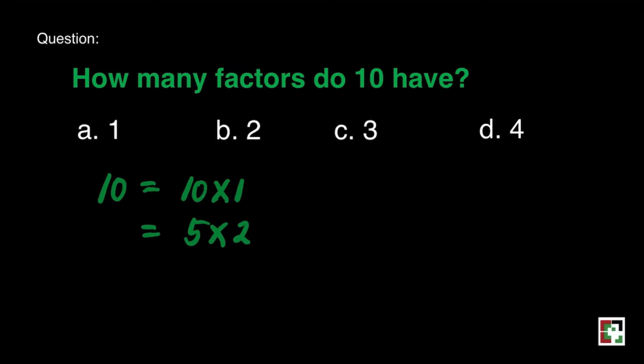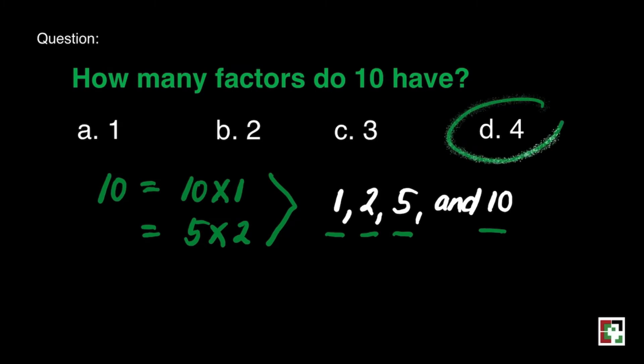All we need to do is to list all the factors. That's 1. We can have it from the least to the greatest. That's 1, 2, 5, and 10. So how many factors do we have all in all? And that is 4. Our answer for this question is letter D.